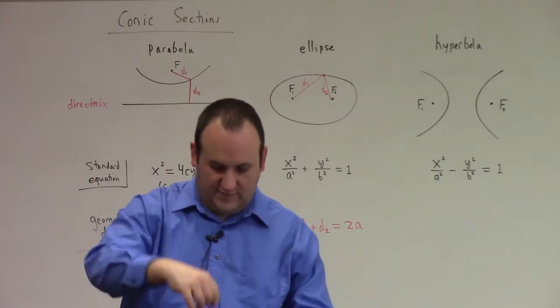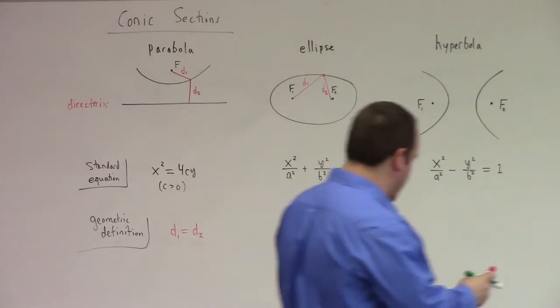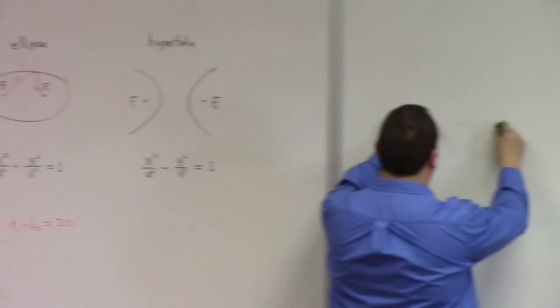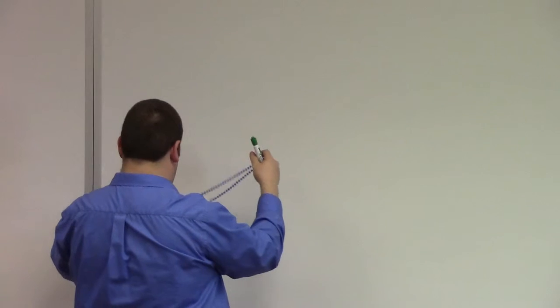An ellipse, if you pick a point on the ellipse and you look at the distance from focal point one and focal point two, D1 plus D2 should be equal to 2A relative to the standard equation. The ellipse is the collection of points where the distance from one point plus the distance to the other point is held fixed.